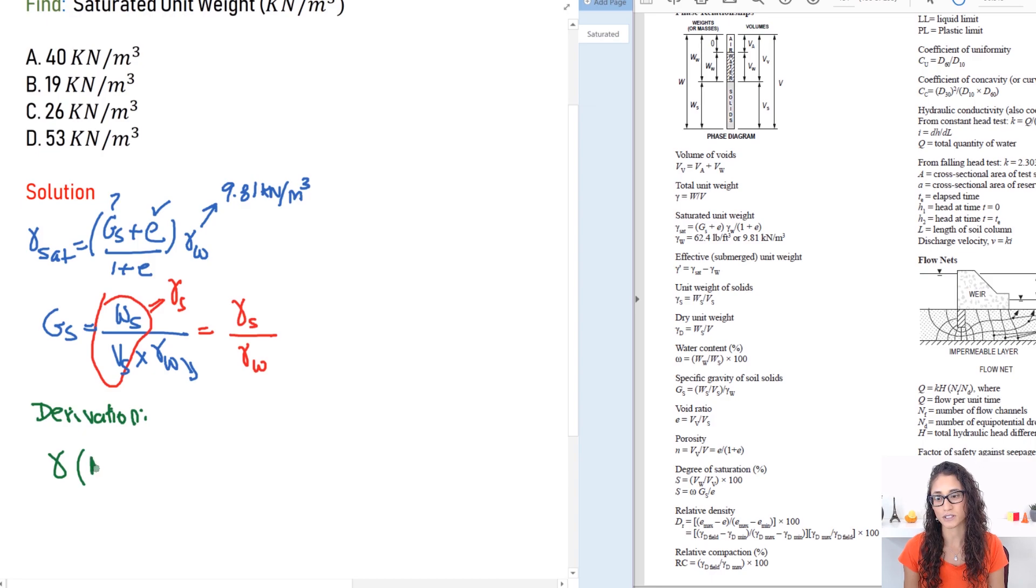What we can do is rewrite the unit weight in terms of density times G. So let me show you how this works. So density is equal to mass over volume, right? Volume is cubic meters, the mass is in kilograms, right? Now the gravity is, let's just write G and that one usually is meters per second squared.